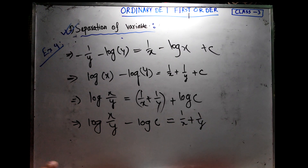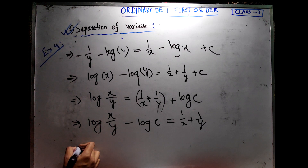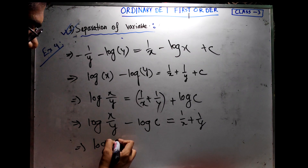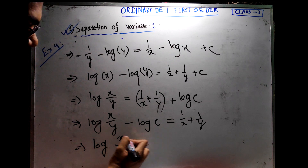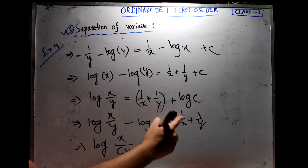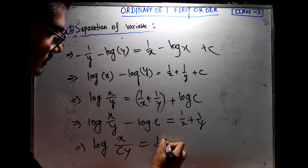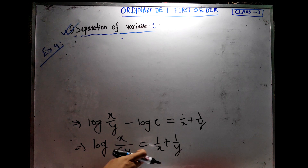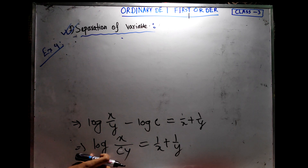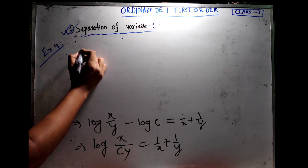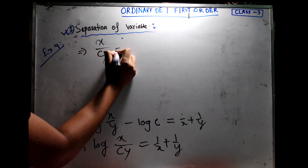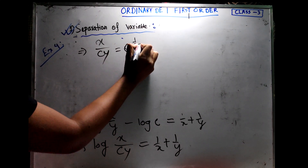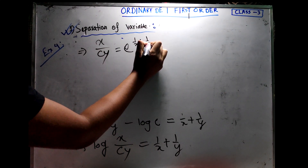Simplifying the log terms: log(x / cy) = e^(1/x + 1/y). This is the final simplified answer for this example.